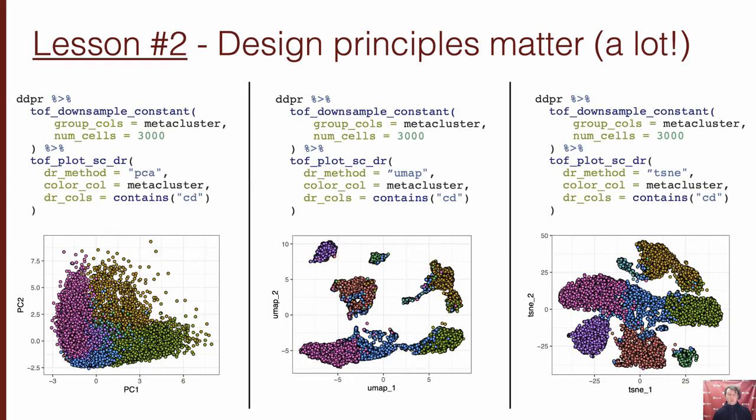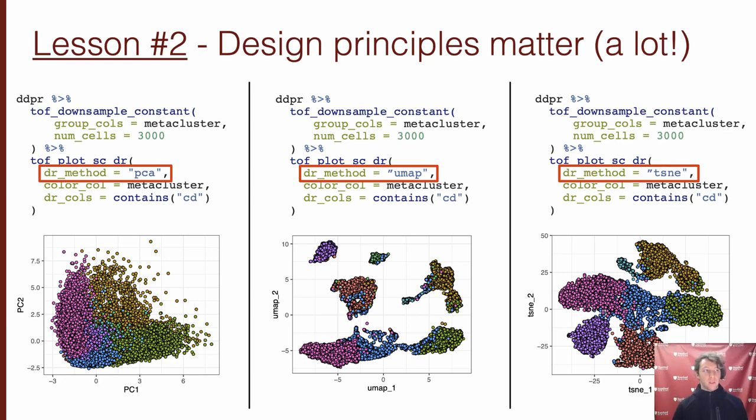I think this point is well illustrated too by how simple it is to use TidyTOF to perform three different kinds of dimensionality reduction by changing only a single flag in these identical pipelines. You can see that this abstracts out the need to navigate the original function syntax and allows users to focus on what they really care about, which is their data.